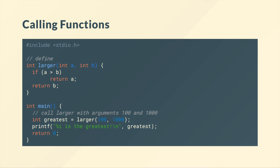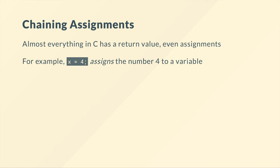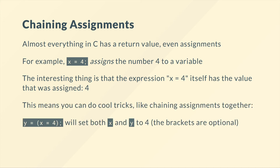Functions return things, but actually almost everything in C has a return value — even assignments. For example, x = 4 assigns the number 4 to a variable, but the expression x = 4 itself has the value that was assigned, which is 4. So we can chain assignments together: y = x = 4 will set both x and y to 4. The brackets are optional here — C has operator precedence and goes right to left, so it does x = 4 first anyway, then sets y to that result.